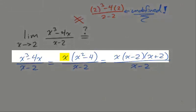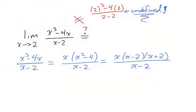We can factor the numerator by first pulling out an x and then factoring a difference of squares, and then cancelling x minus 2. We can write the rational function as a polynomial, x times x plus 2.